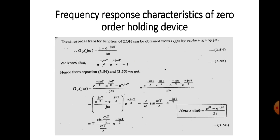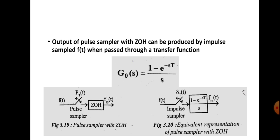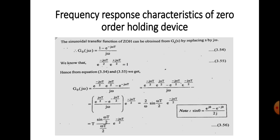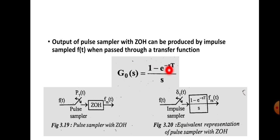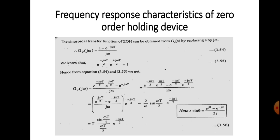Next, let us see the frequency response characteristics of the zero order holding device. We have this transfer function for the zero order hold circuit, and ZOH is replaced by this transfer function. We can say that the sinusoidal transfer function of the zero order hold can be obtained from G₀(s) by replacing s with jω. We know that sinusoidal response is obtained by replacing s by jω, as studied in the second module of the control system.